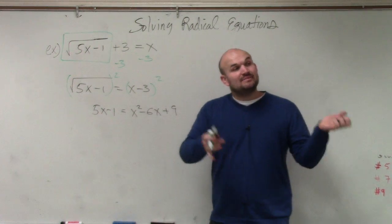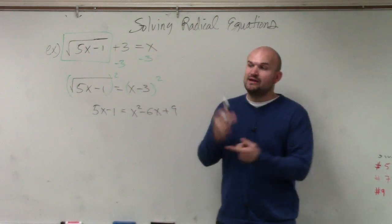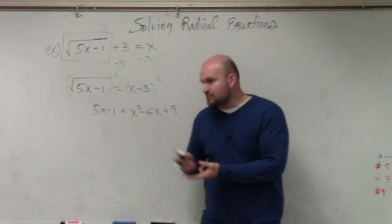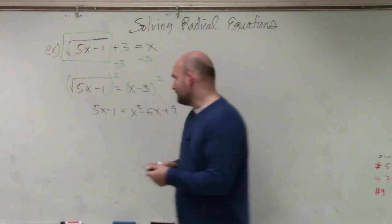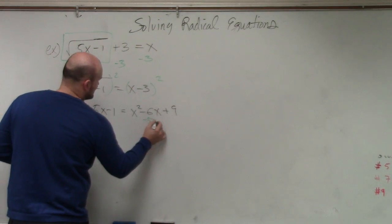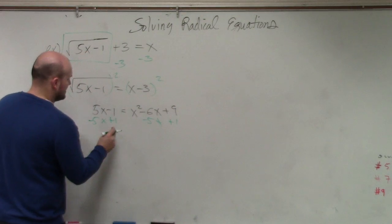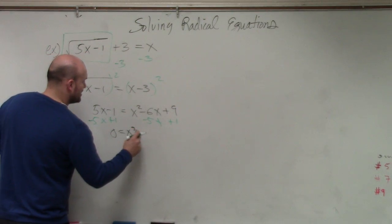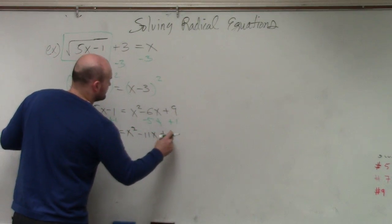So therefore, I need to set them equal to 0. And they need to apply factoring, completing the square, or quadratic formula. So I set them equal to 0 by subtracting a 5x on both sides, adding a 1 to both sides. And I get 0 equals x squared minus 11x plus 10.